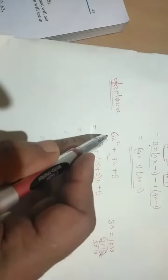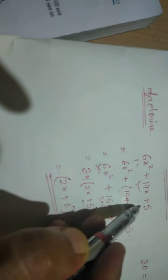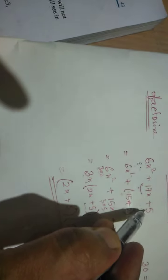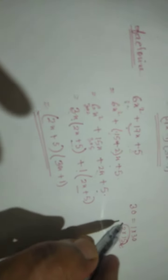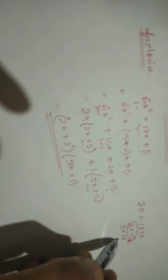Again, another sum that is 6x square plus 17x plus 5. So when we multiply 6 and 5, we'll get 30, and we break it: 1 into 30, 2 into 15, and 3 into 10.